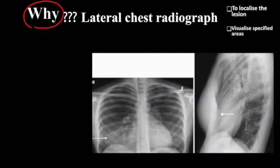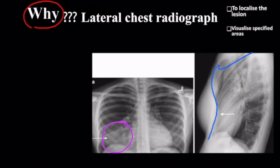Secondly, you have another frontal radiograph where you can see there is some pathology in the right lower lung zone. Comparing to the previous radiograph, it appears similar to the example shown before. But if you were to carefully observe for other subtle signs, you know that it is not just some consolidation or collapse — it is something more. Once you get a lateral chest radiograph, you can confirm the same. As you can see, this is the sternum and it is going inwards — this is a case of pectus excavatum.